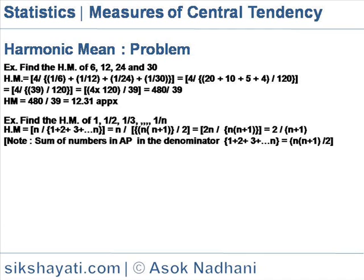That is, the inverse of each number. Since there are 4 observations, HM equals 4 divided by (1/6 + 1/12 + 1/24 + 1/30), which equals 4 divided by (20 + 10 + 5 + 4) over 120, because 120 is the common denominator when adding up the fractions.